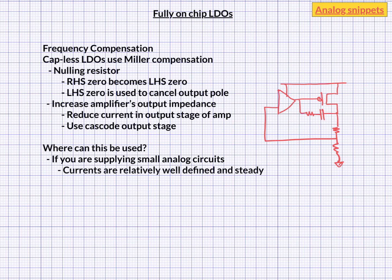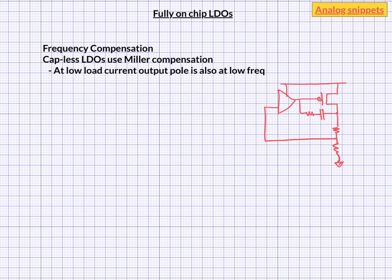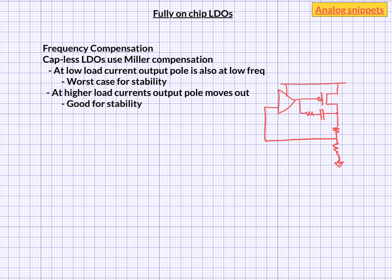To better understand that, let's discuss the pole movements with the output load current. At minimum or low load currents, the output impedance is high, and hence the output pole is at low frequencies. Since the output pole is your non-dominant pole, this is the worst case for stability. Note that this is the exact opposite of what we had in conventional LDOs, where low load current is the best case for stability. As load current increases, the output pole moves rapidly to higher frequencies.